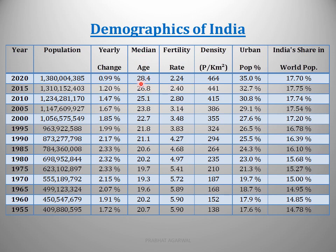Similarly, the median age has been consistently increasing; it was around 20 years in 1955. Coming to the density of population: in 2020, the density is 464 persons per square kilometer, which was 441 five years ago, and was 138 in 1955. It has been continuously increasing because India's land area remains the same while the population only grows.